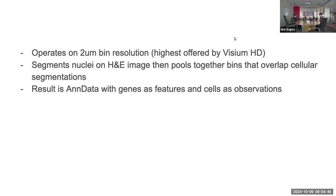As a general overview of the software: it works with Visium HD data, which comes with three different analysis resolutions. The basic resolution is the two micrometer bins of gene expression — that's the highest resolution. 10X Genomics actually recommends most analyses be done at the eight micrometer resolution, which essentially just combines the two micrometer bins. They recommend eight micrometers just because it's so much data.